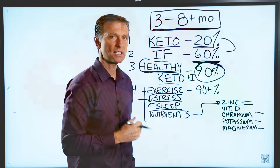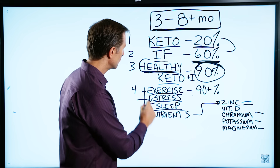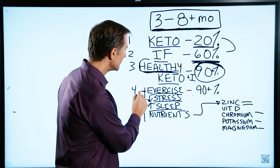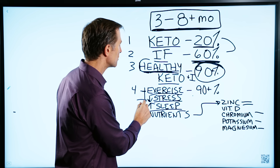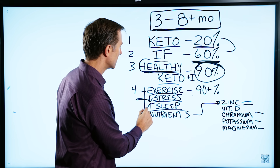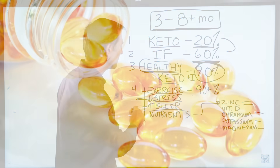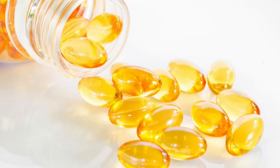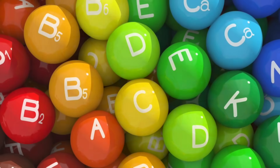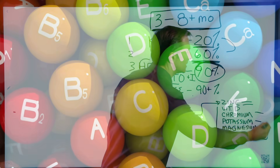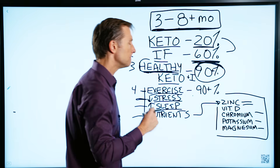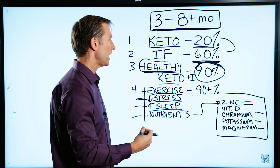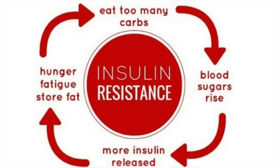And if you want to enhance and speed up your results, you would add these things: exercise, reduce your stress, increase sleeping, and certain supplements to take more of certain nutrients that target the beta cells of the pancreas that are involved in insulin resistance.